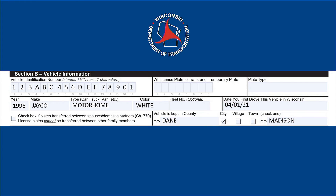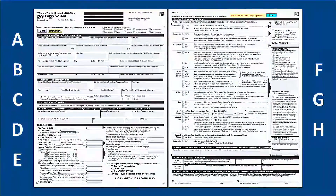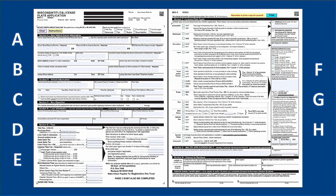Section B should now be complete with the vehicle information. Check out the other videos in this series to complete each section of the MV1 Wisconsin Title and License Plate application.